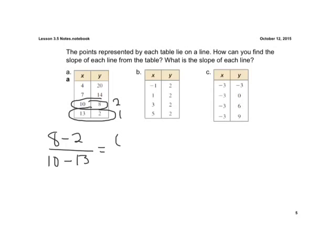If we do the math here, 8 minus 2 is 6, 10 minus 13 is negative 3. And so we are going to get if we reduce that down, we're going to get negative 3 over 1, and that's our slope, so a slope of negative 3.